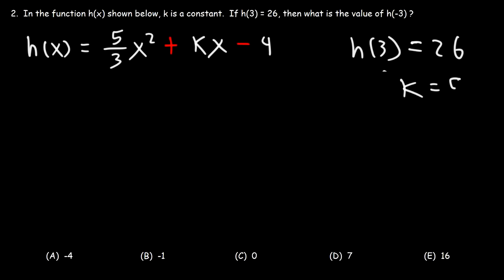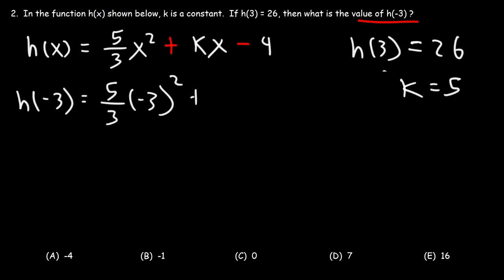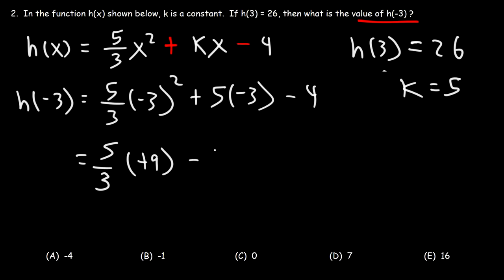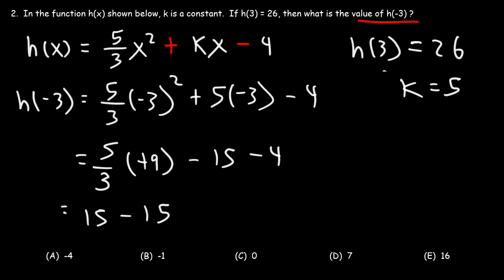Now let's write that in. Now that we have our k value, we can answer the question: what is the value of h of negative 3? Let's replace x with negative 3 and k with 5. Negative 3 squared is positive 9. 5 times negative 3 is negative 15. 9 divided by 3 is 3, and 3 times 5 is 15. So we have 15 minus 15 minus 4. These two will cancel, giving us negative 4. So h of negative 3 is negative 4, and A is the right answer.